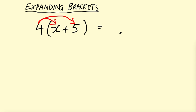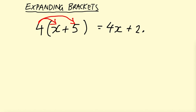So 4 times X gives 4X, and then 4 times plus 5 gives plus 20. You can have all different things involving brackets.